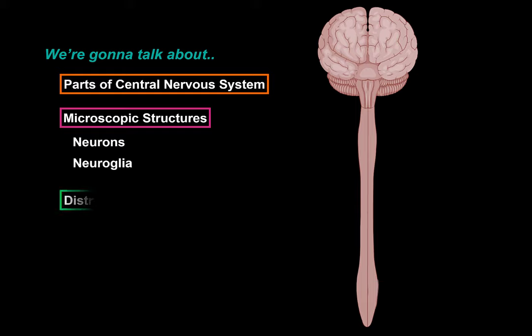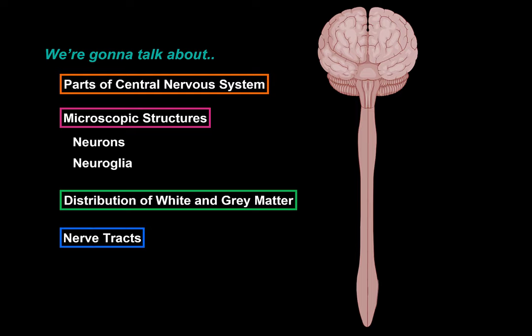Basically understand what neurons and neuroglia are and how they are distributed in the central nervous system. After that, we'll be talking about the distribution of white and gray matter and talk about nerve tracts and then end by talking about the general nervous system development.